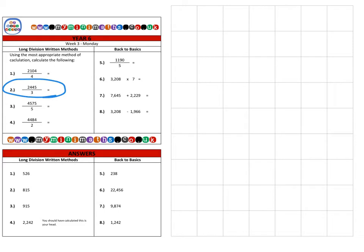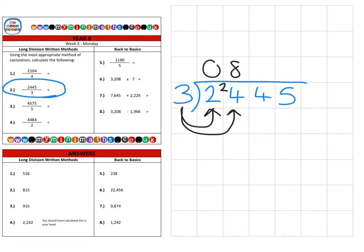On to question two, which is 2445 divided by 3. Again, we have a single digit that we're dividing by—we call this the divisor. Three's into two don't go, so we carry the unused two over. Then three's into 24 go eight times with no remainder. Three's into four go once with one left over, and then three's into 15 go five for a final answer of 815.